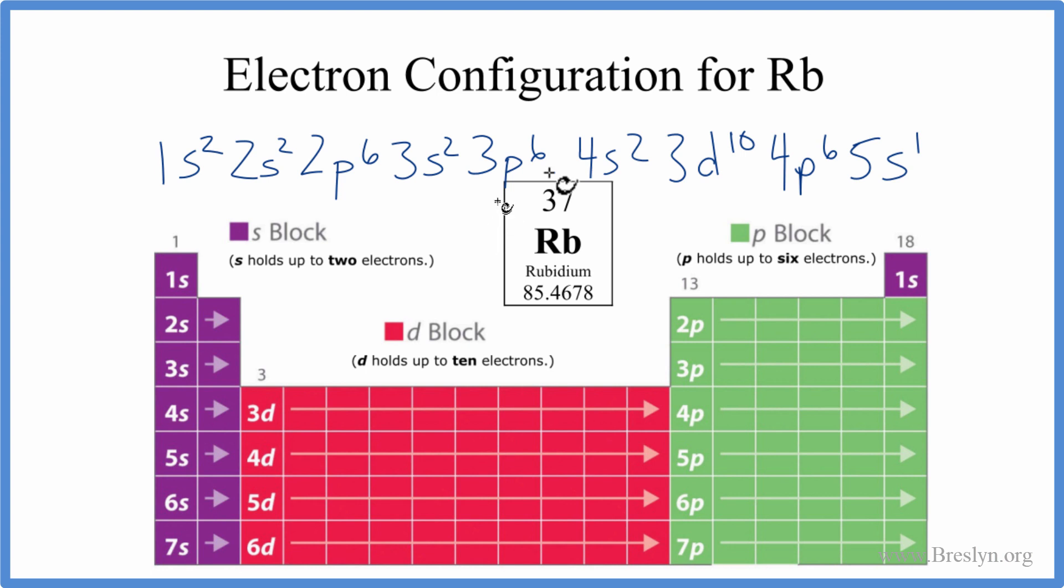You will sometimes see the 3d written before the 4s. That's okay. They're very similar in energies. But traditionally, we write it this way. This is Dr. B with the electron configuration for rubidium.